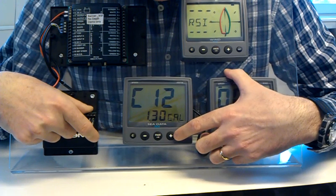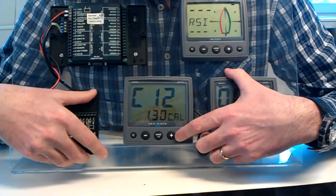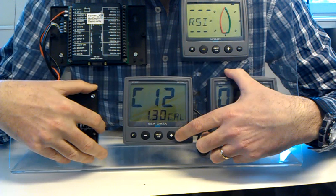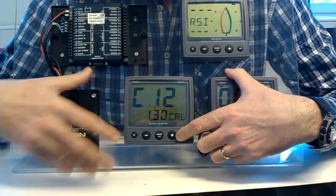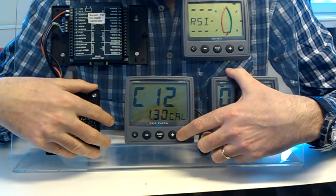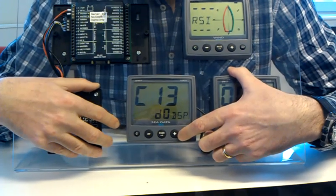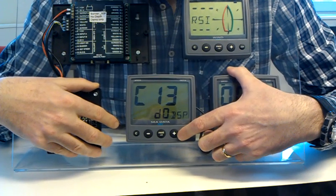Moving on to C12, this is calibration for the speed. This is a bit of a complicated issue that is probably something you wouldn't do straight away once you install the system. This is if your speed value is off. You can calibrate it later, and there's a formula on how to do that in the instruction books. C13 is the dampening for speed, and we're going to talk about dampening later on when we talk about wind values.